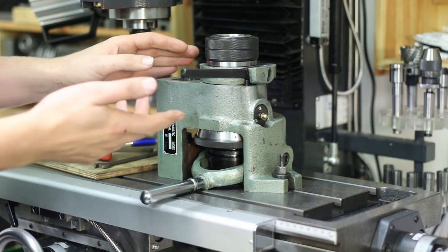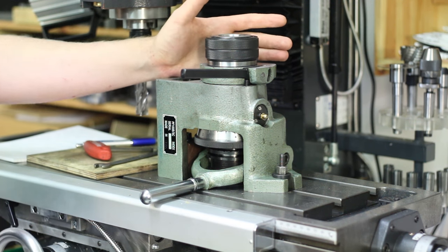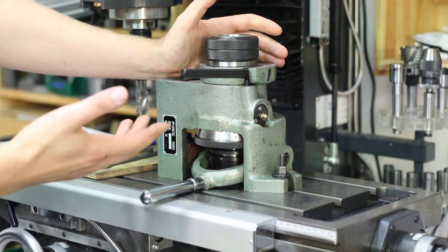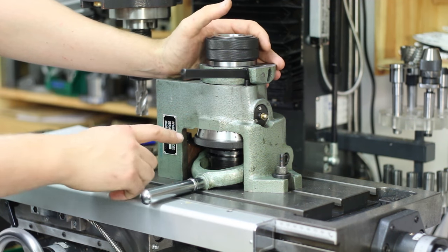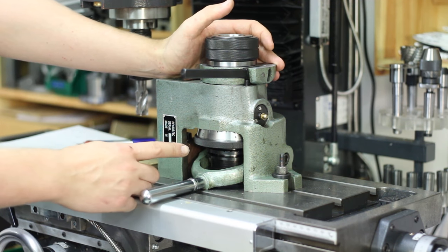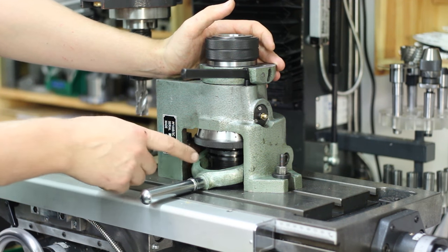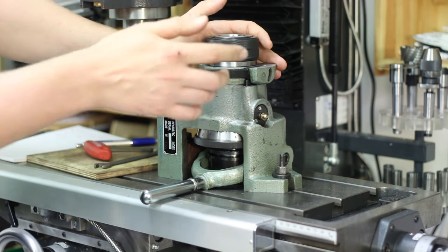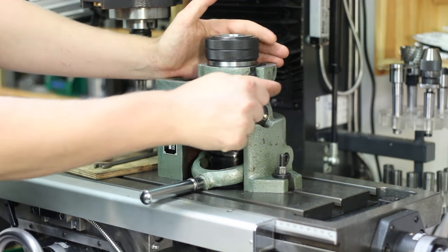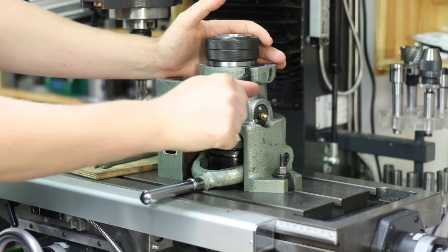If you're not familiar with these, these are for rapid indexing. You can set up to 24 divisions on the dividing plate here and then with the ratchet you can index on.